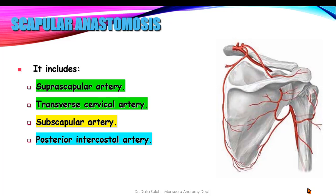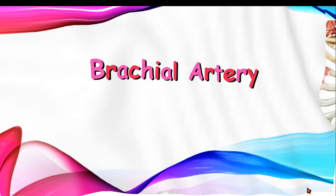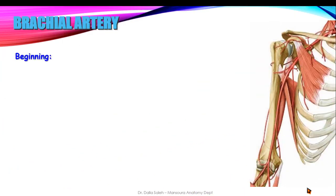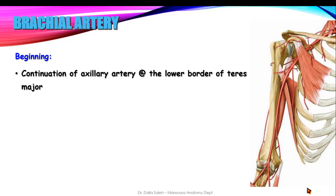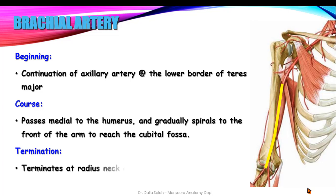Next, the brachial artery. It begins as a continuation of the axillary artery at the lower border of the teres major muscle, then passes in the arm — brachial means arm — medial to the humerus, and gradually spirals to get in front of the arm. It terminates at the neck of the radius by dividing into the radial and ulnar arteries.